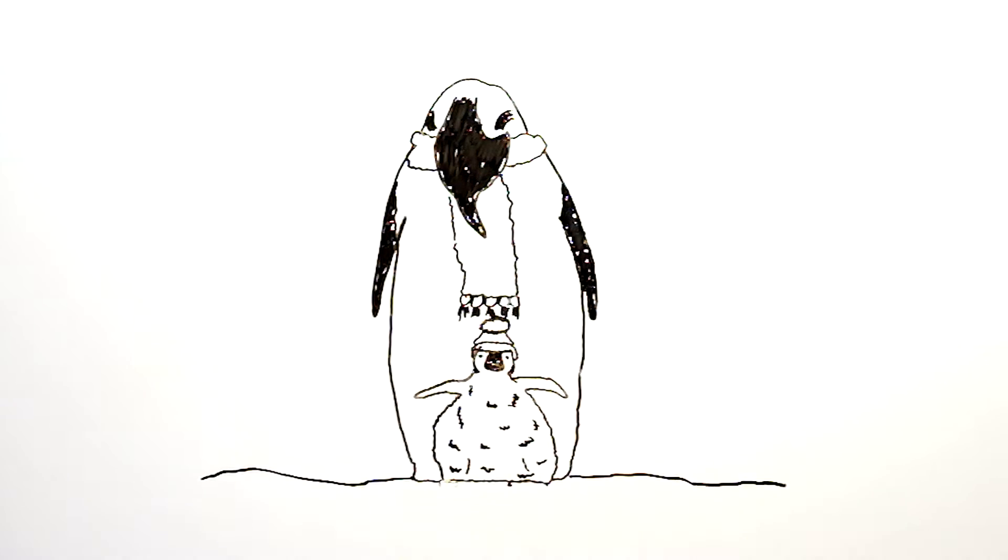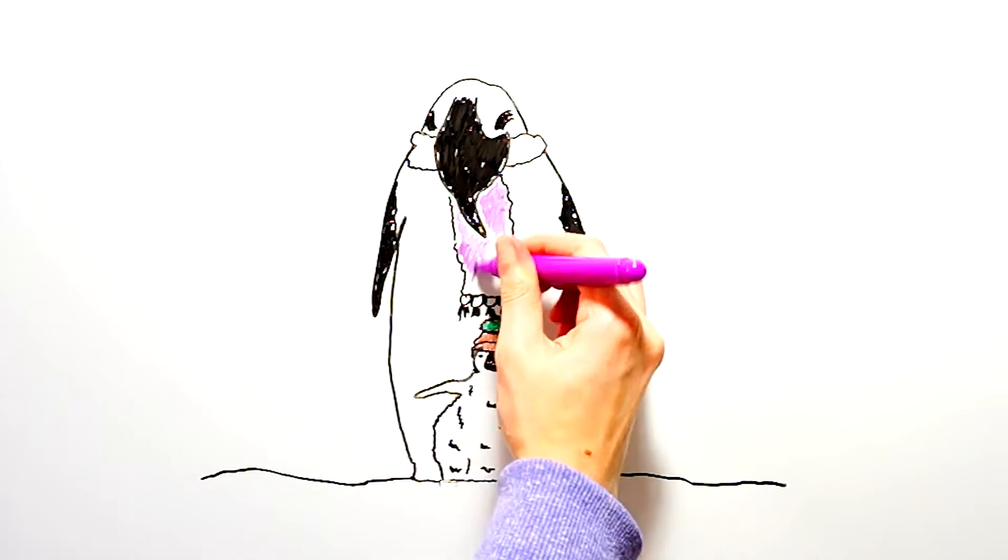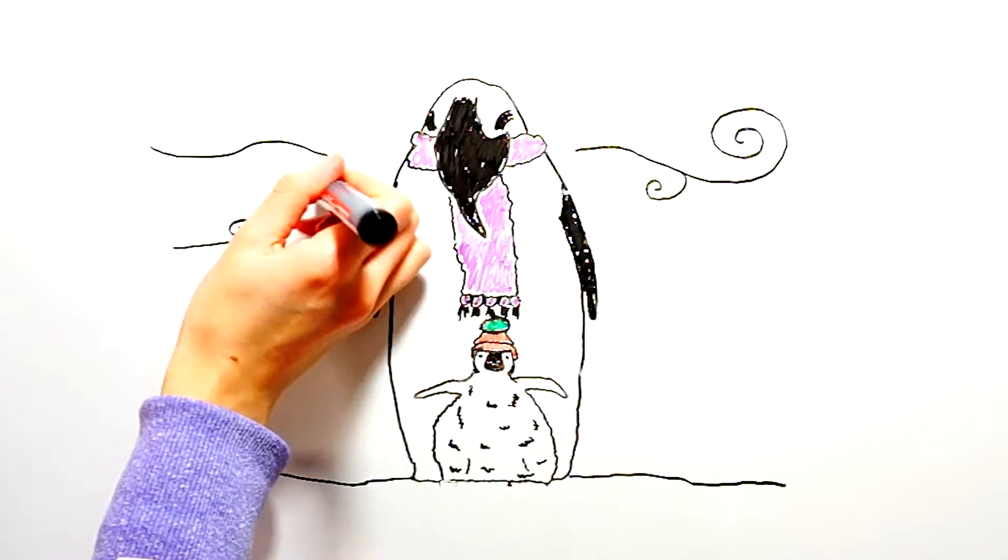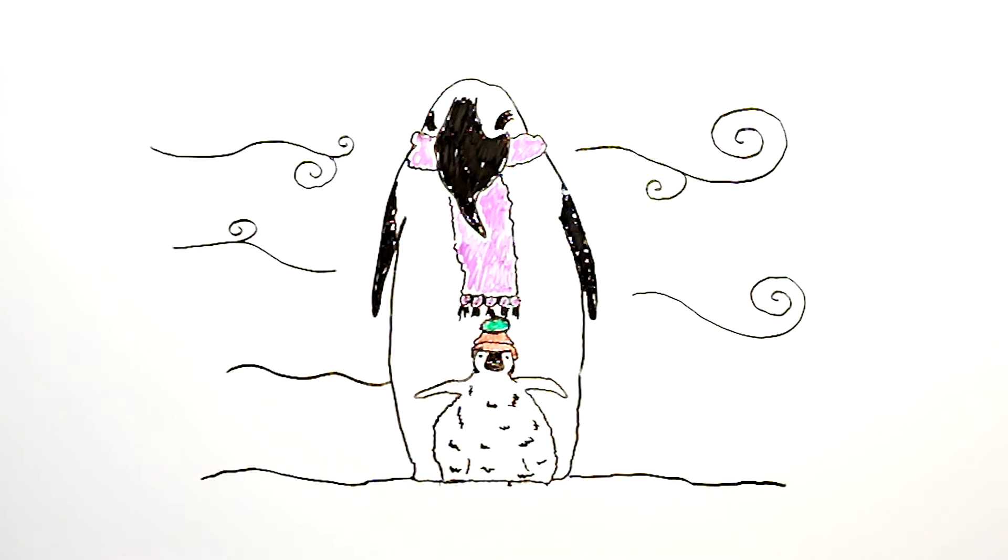The emperor penguins spend the entire Antarctic winter standing on ice in these extremely cold conditions, but thanks to three very important adaptations, their feet are kept just one or two degrees above freezing.